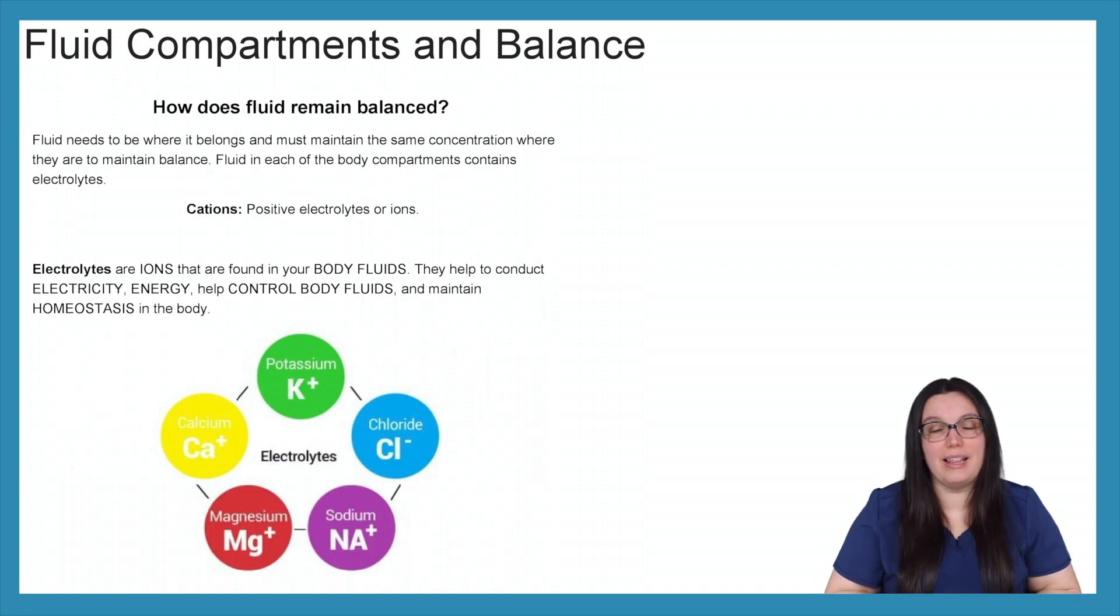So how does our fluid remain balanced? Well, fluid needs to be where it belongs. In order to maintain that, they have to have the same concentration where they are in order to maintain balance. So fluid in each body compartment contains electrolytes. Electrolytes, also known as cations, there are positive electrolytes or ions. So electrolytes are ions that are found in our body fluid. They help conduct electricity, energy, help control body fluids, and they also maintain homeostasis in the body.